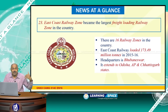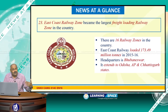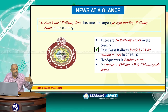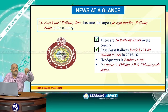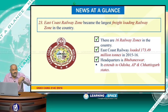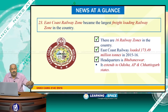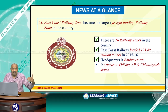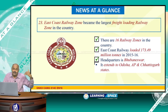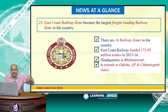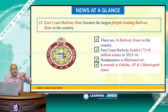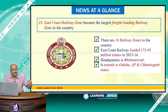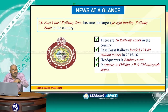East Coast Railway zone became the largest freight-loading railway zone in the country, loading around 173.49 million tons in 2015-16. Indian Railways has 16 railway zones, and the East Coast Railway zone, headquartered in Bhubaneswar, ranked number one in freight loading. This zone extends predominantly to Odisha, followed by north coastal Andhra Pradesh and parts of the Chhattisgarh region. Iron ore from the world-famous Bailadilla iron ore mines in Chhattisgarh is served by this railway.